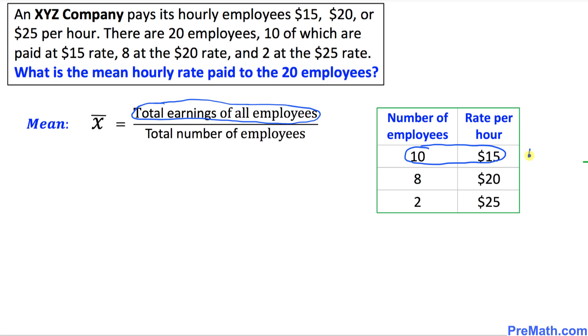8 times 20, that is going to give us 160. And finally, 2 times 25 is going to give us 50. Let's go ahead and add all these values up. If we add them, we are going to get 360. So that means the total earnings turn out to be